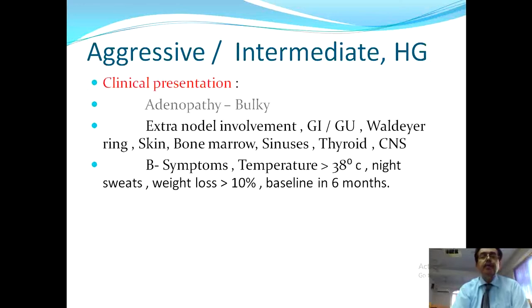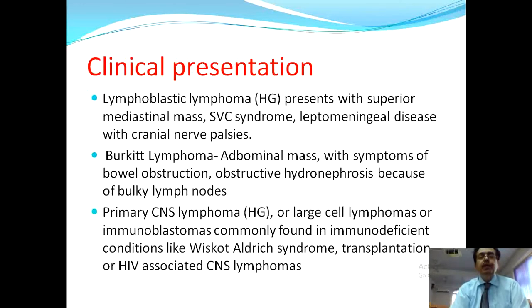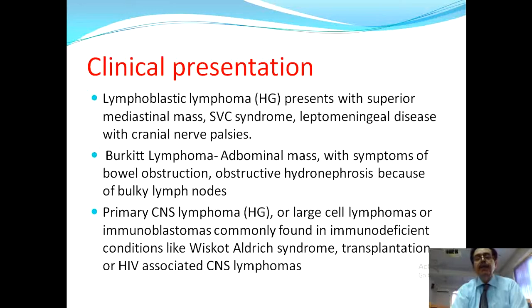Lymphoblastic lymphoma presents with a superior mediastinal mass causing superior vena cava obstruction — the patient has suffusion of the face, bluish discoloration, swelling, and Pemberton's sign is positive. These lymphomas may also have leptomeningeal involvement of the arachnoid and pia mater, helpful in diagnosis via lumbar puncture. Cranial nerve palsies may also occur depending on the location of the lymphoma in the brain.